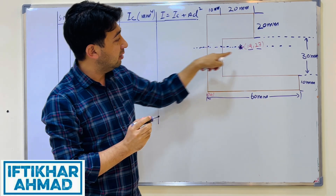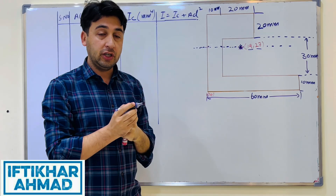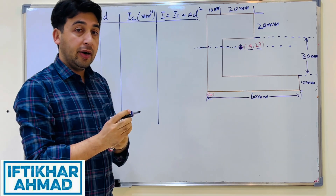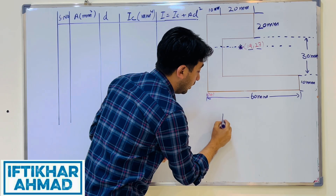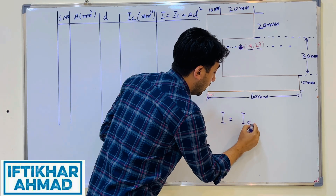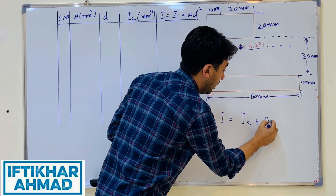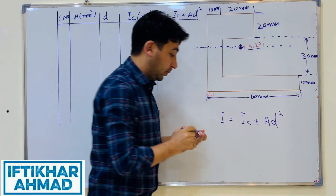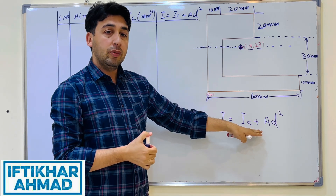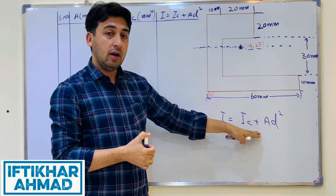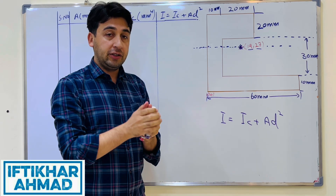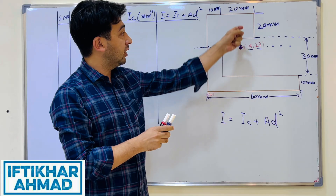About this horizontal centroidal axis we need to find the moment of inertia. The formula is I = IC + AD², which is the parallel axis theorem. We use this when finding the moment of inertia of any shape about an axis other than the centroid of that shape.